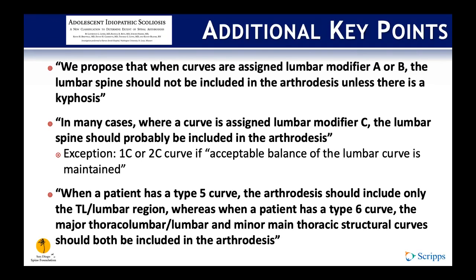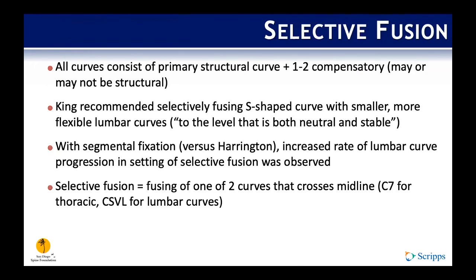Key points from the Lenke paper: when curves are assigned modifier A or B, the lumbar spine should not be included in the arthrodesis unless there is kyphosis. For a lumbar modifier C, the lumbar spine should probably be included — with the exception of type 1C or 2C curves if acceptable balance of the lumbar curve is maintained. For a type five curve, only the thoracolumbar region should be fused, whereas for type six, both the thoracolumbar and the minor main thoracic curve should be included.